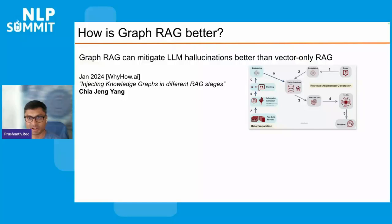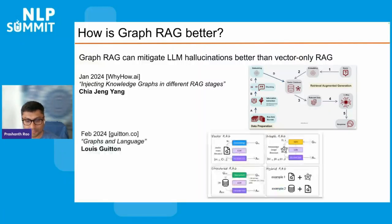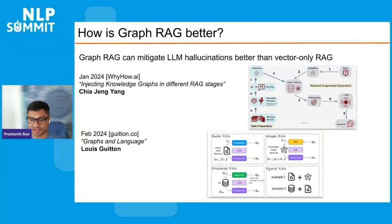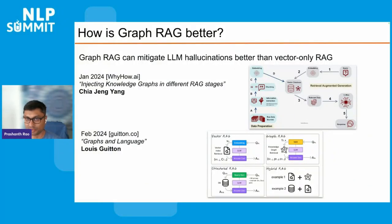Another report by Louis Guitton earlier this year titled 'Graphs and Language' describes how RAG is an umbrella term and helps to distinguish between vector RAG and graph RAG in the way that NebulaGraph introduced in their 2023 blog post. Louis also describes the term hybrid RAG, which combines the results from vector RAG and graph RAG and potentially other systems like structured or relational databases.